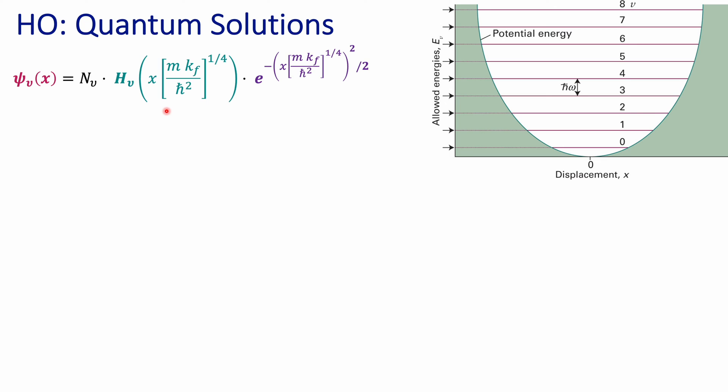Hermite polynomials are a special type of functions — polynomials — whose shape is also going to change depending on the principal quantum number. So this expression looks a little too complicated, and we can make some rearrangements, particularly changing the variables, to try to make our problem more tractable and easier to follow.